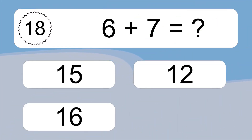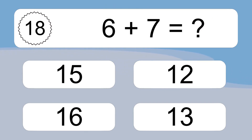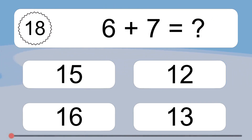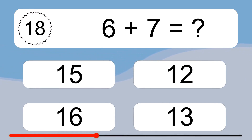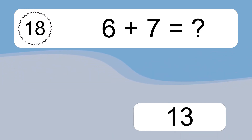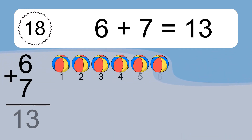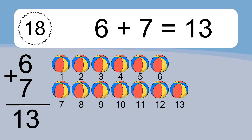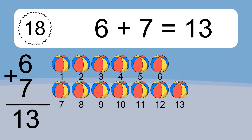6 plus 7 equals what? 6 plus 7 equals 13. Let's count it: 1, 2, 3, 4, 5, 6, 7, 8, 9, 10, 11, 12, 13.